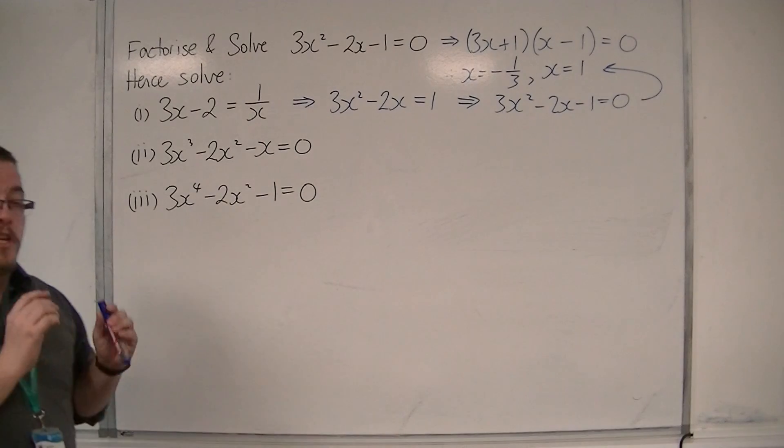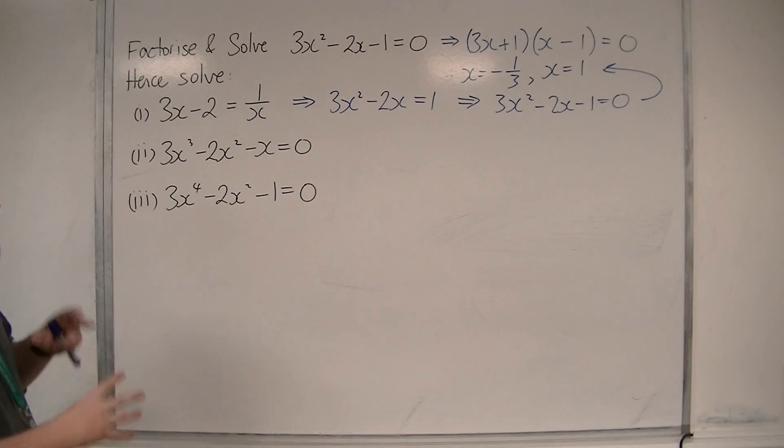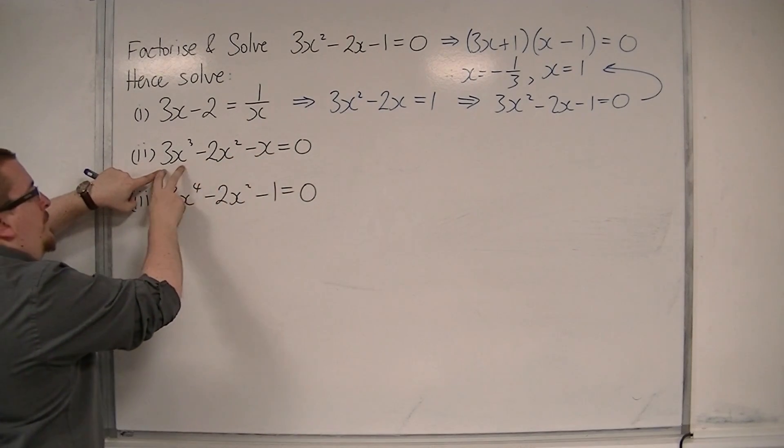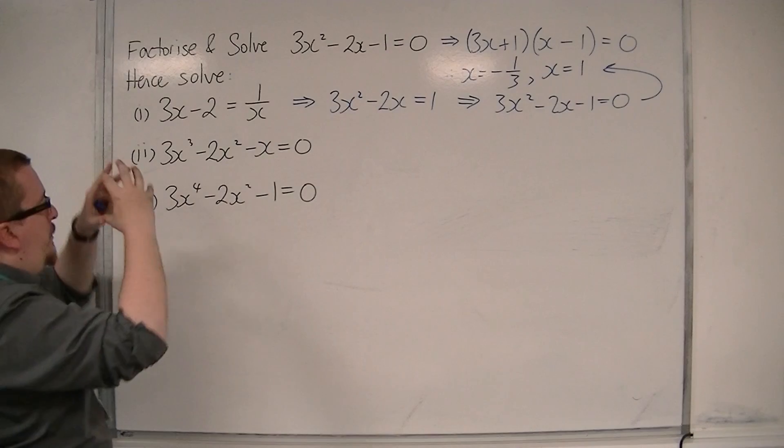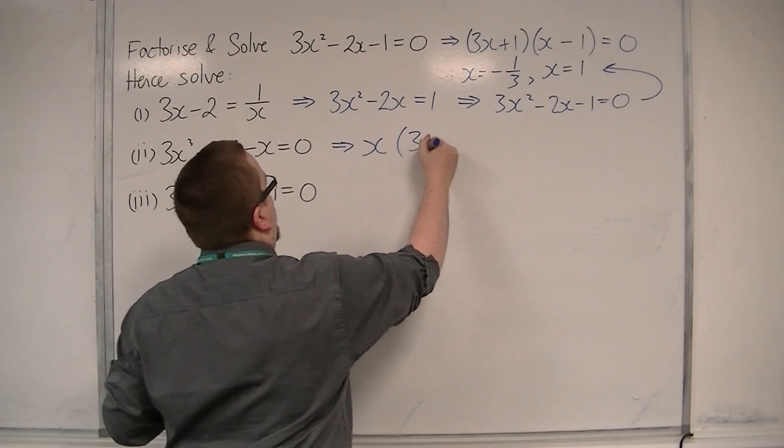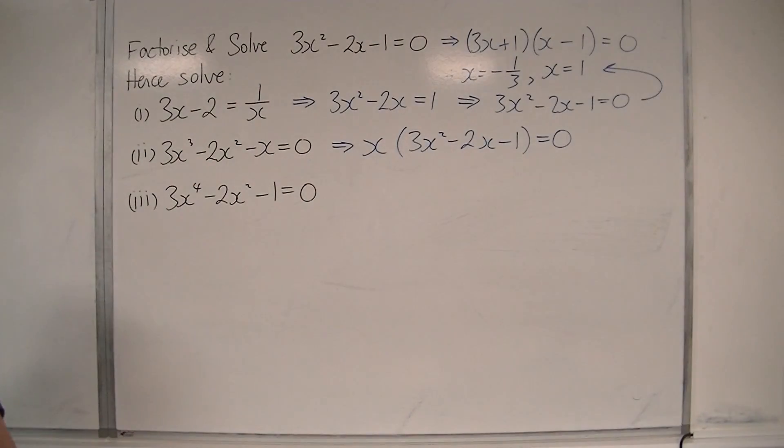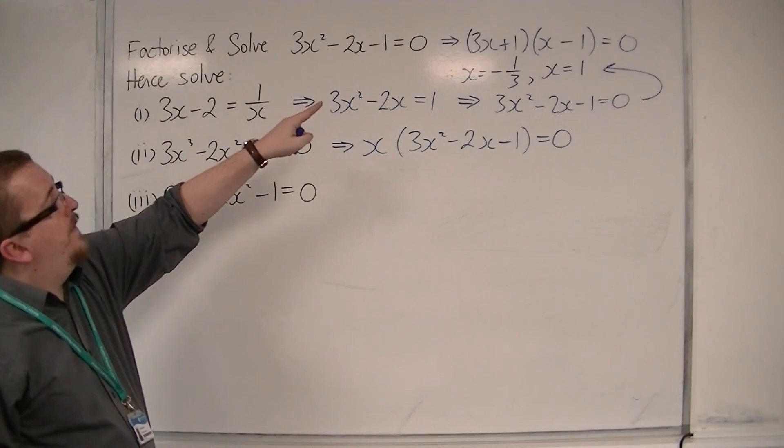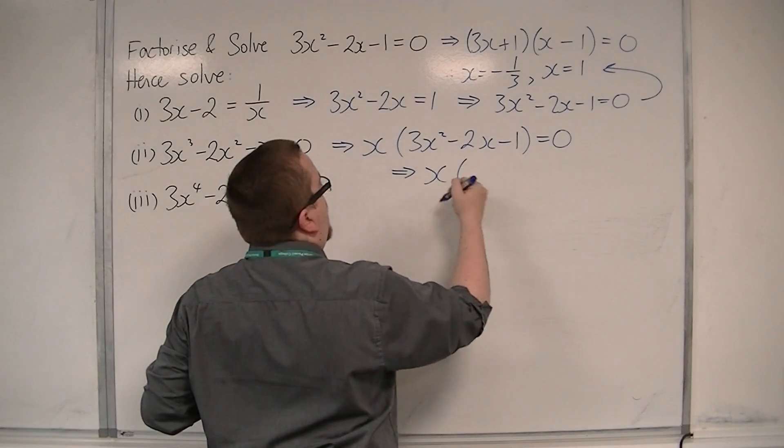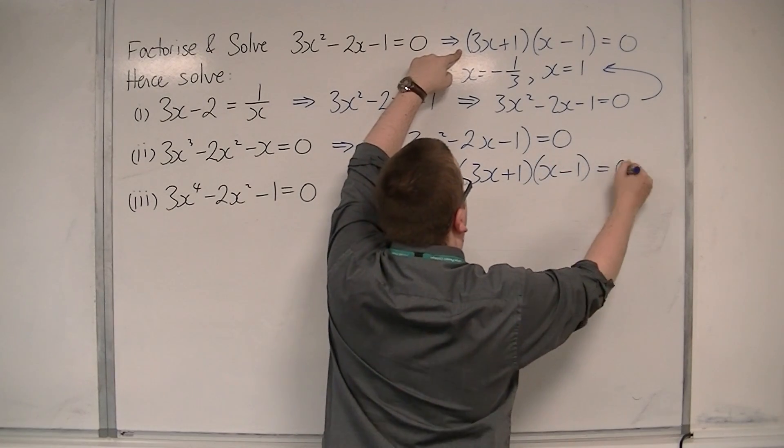With the second one, we've got a cubic. I haven't showed you how to solve cubic equations, but the fact is that each of these three terms have something in common. They all have an x, and so you can factor out the x. I'm going to factor out the x, and I'm going to be left with 3x squared minus 2x minus 1 inside the bracket. This quadratic is the same one that I had up there, so I know that I can factorise this quadratic. So, I'm going to have x times 3x plus 1 times x minus 1, and that's all going to be equal to 0.